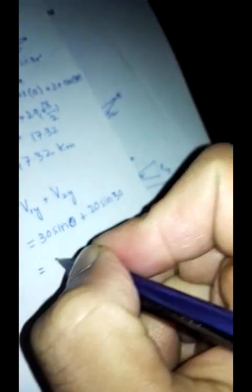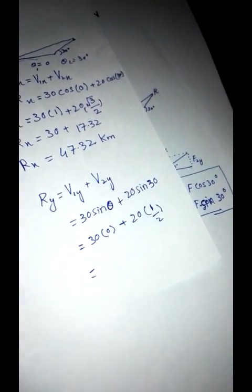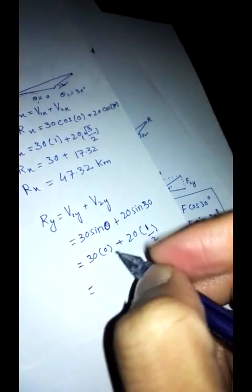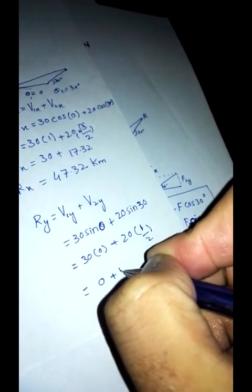So sin of 0 is 0. 30 into 0 is 0 plus 20 times sin of 30, which is 1 by 2, equals 10.